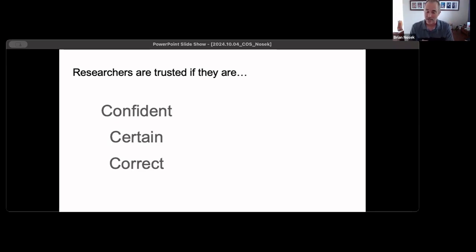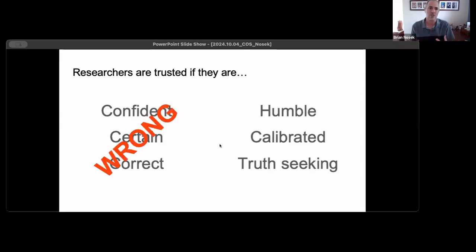A real challenge in any knowledge claim area is what is the basis of trustworthiness? Why should researchers be trusted in terms of their findings and reports compared to other types of knowledge claims? One way that people have thought about researchers being trusted is that they should be confident in their findings, they should communicate them with certainty, and they should just be correct. This is what makes researchers trusted—if they're right all the time and they convey that certainty and confidence. I think that's the wrong way to think about it.